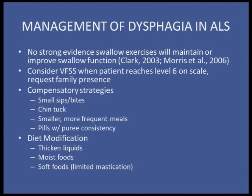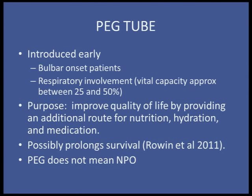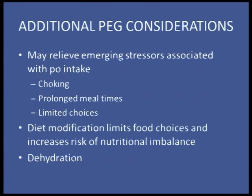When managing dysphagia in ALS, there's no strong evidence that swallow exercises will maintain or improve swallow function. However, we stress: use what you have. The best exercise for speaking and swallowing is talking, managing your secretions, and eating. We consider a video swallow study when a patient reaches around level six or when they have dietary changes, and we discuss compensatory swallow strategies and diet modification. The PEG tube concept is introduced early, particularly with bulbar onset patients — physicians prefer placement before vital capacity drops below 50% to 25%.